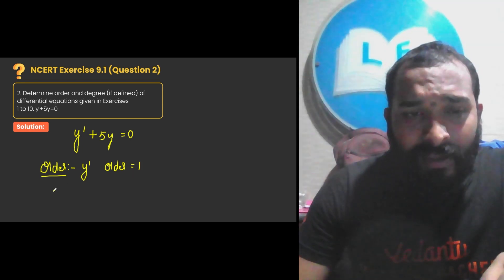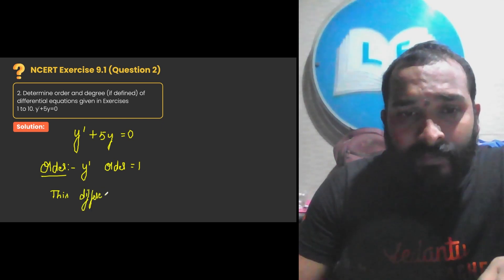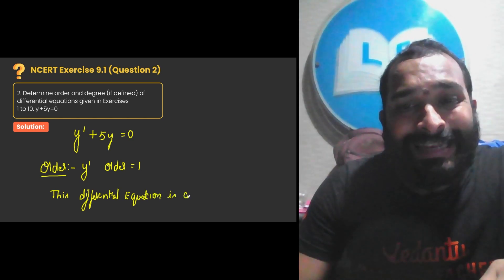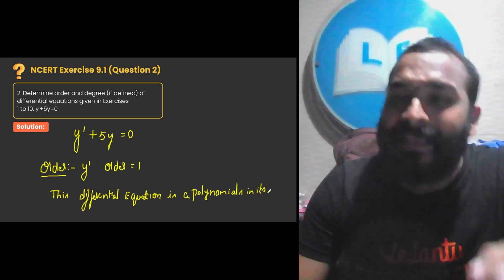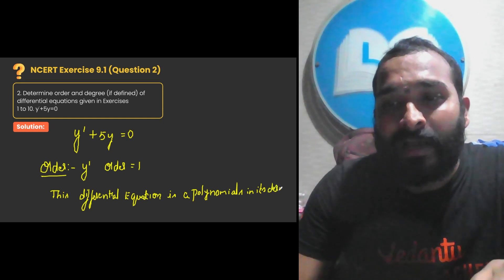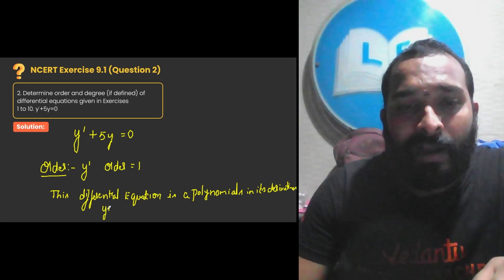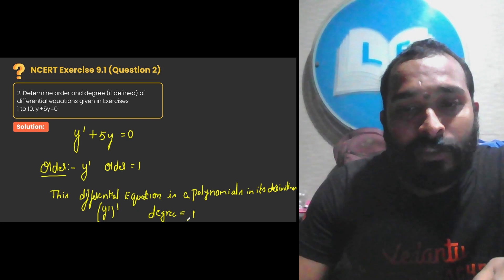You can notice this differential equation is a polynomial in its derivatives. So if it is a polynomial in its derivatives, its degree is defined. Tell me: what is the highest power of the highest derivative? Y dash is the highest derivative, and the power of y dash is 1 — y dash to the power 1. So degree in this differential equation is 1. Order is 1, degree is also 1.